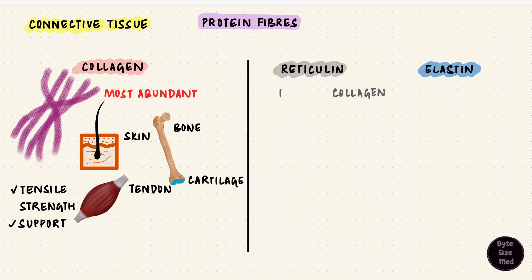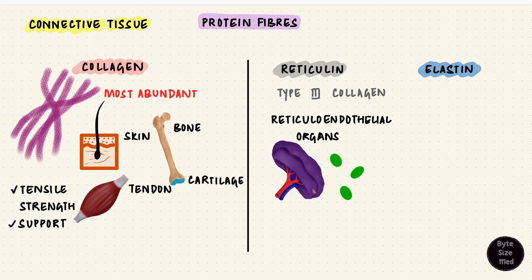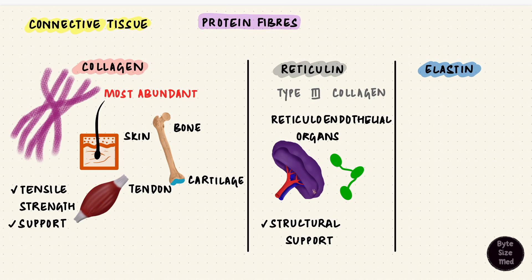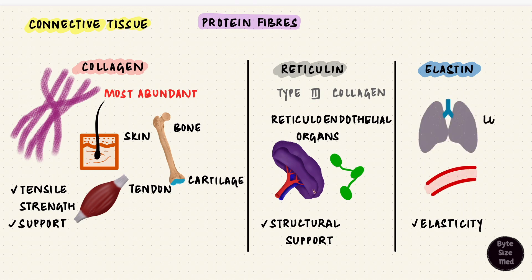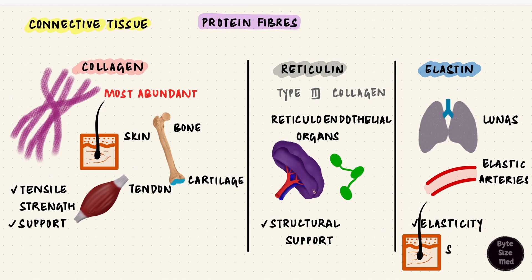Reticulin is a type of collagen — type 3 collagen. It forms a fine meshwork in organs that are part of the reticuloendothelial system, like the spleen, lymph nodes, and bone marrow, where reticular tissue provides structural support. Elastin is elastic and stretchy — it can stretch and return to its original shape. It's found in the lungs, elastic arteries, some elastic ligaments, and skin. Why does pinched skin return to its original state? Elasticity from the elastin fibers in the dermis.